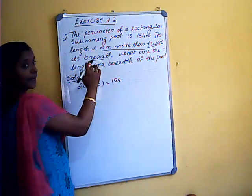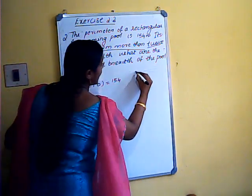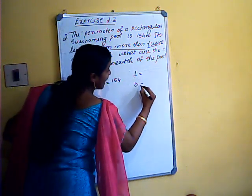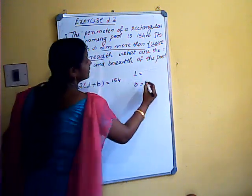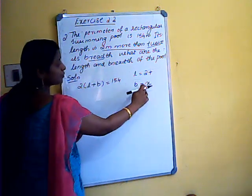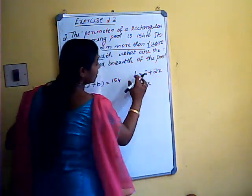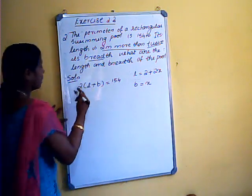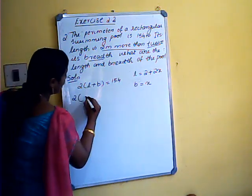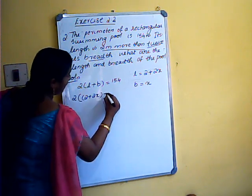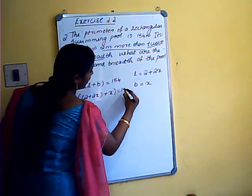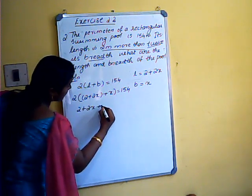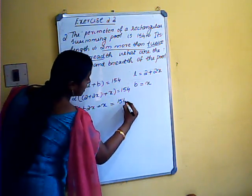Length and breadth are unknown. The length is 2 meters more than twice its breadth, so we take breadth as x. Twice its breadth is 2x, so length is 2 plus 2x and breadth is x. Substituting these values into the perimeter formula: 2 into (2 plus 2x plus x) equals 154.